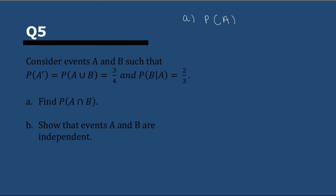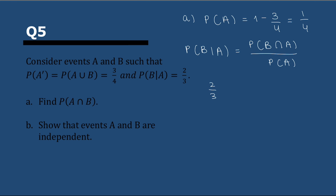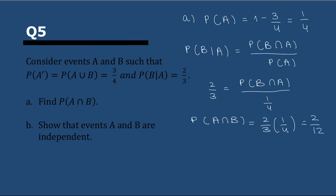Next up, Question 5. We have events A and B. The probability of not-A is 3/4, and the probability of B conditional on A is 2/3. So the probability of A is 1 − 3/4 = 1/4. We know by definition that P(B|A) = P(A ∩ B) / P(A). Since we know P(A), we can solve: P(A ∩ B) = 2/3 times 1/4.